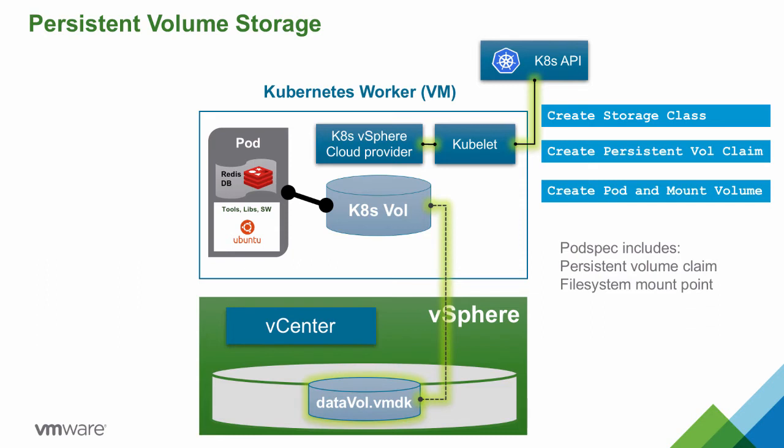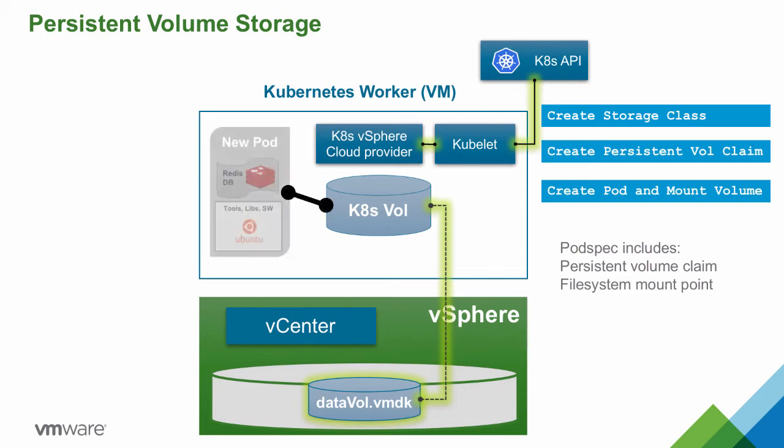Should a pod fail, the disk will persist. If a replica set has been defined on the pod, it will be recreated, and the disk will be mounted on its file system.